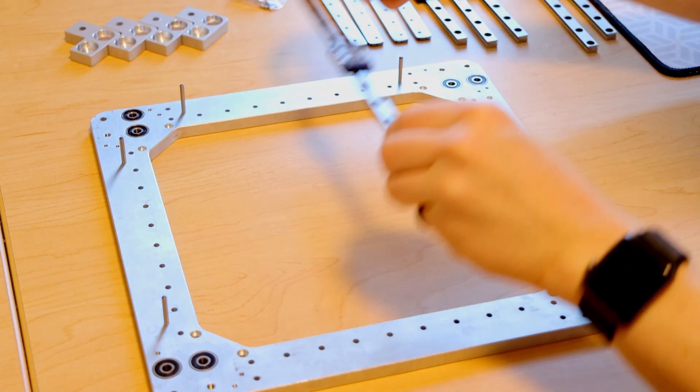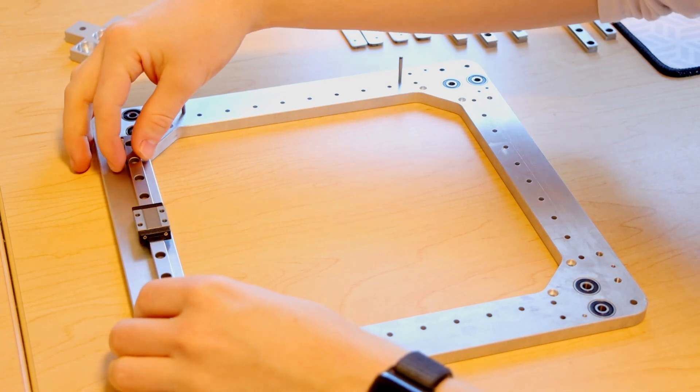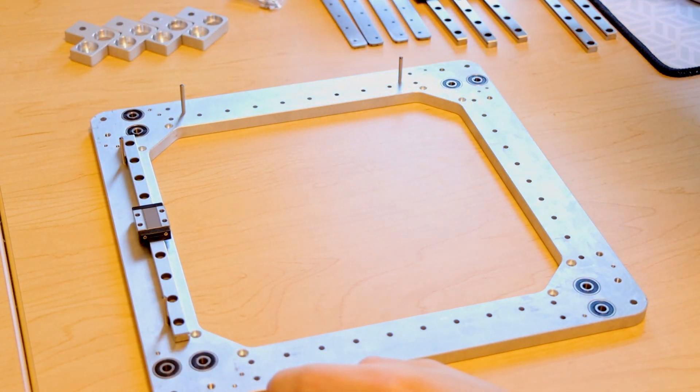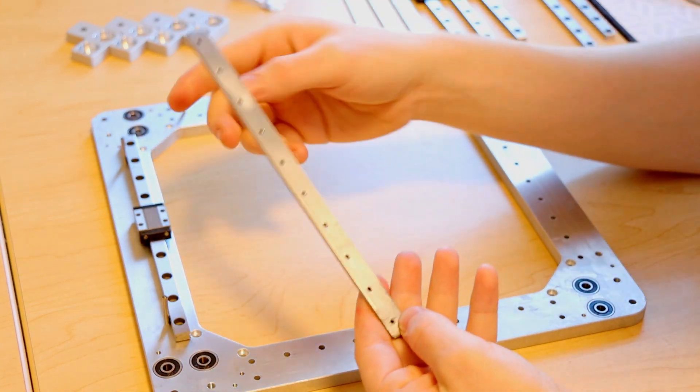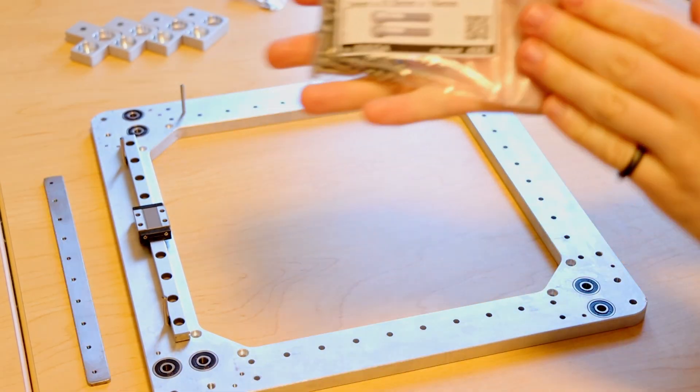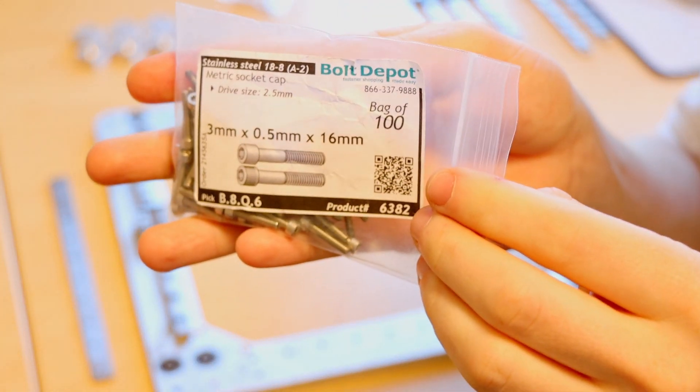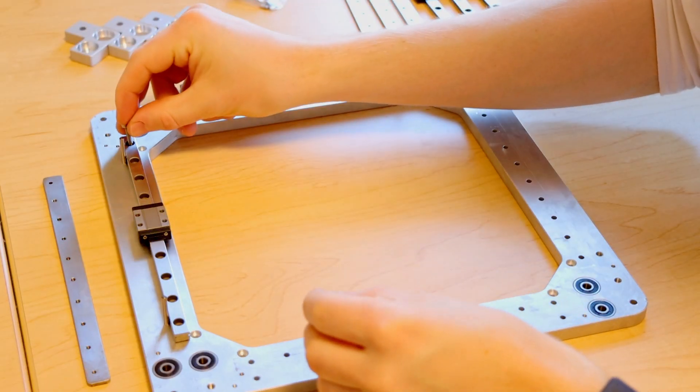So now I can take a linear rail, push it up against these features and then we'll be using these steel backing plates to pass bolts through the linear rail and into the back side of the plate. And this is fastened with M3 by 16 millimeter screws. I'm just going to start with two.